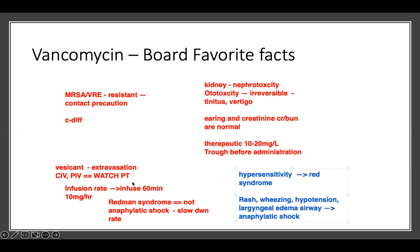Central venous line is preferred over peripheral. But if you don't have a central line, you can give it through a peripheral line.